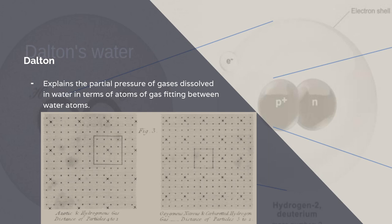Carburetted hydrogen gas, maybe methane, I'm not sure. Oxygenous nitrous and carbonated hydrogen gas. These are old chemical terms. But anyway, he is able to explain the differential partial pressures of different gases in terms of how they fitted into a matrix of water atoms.